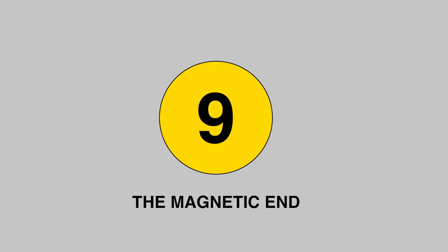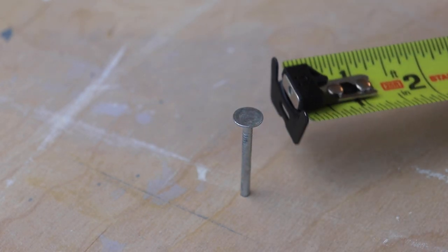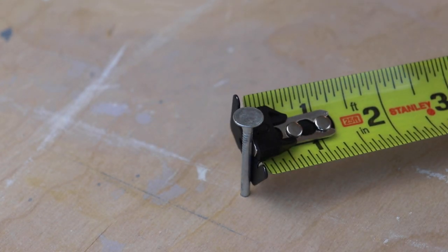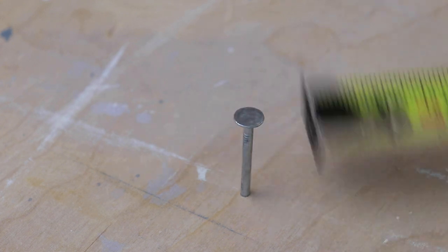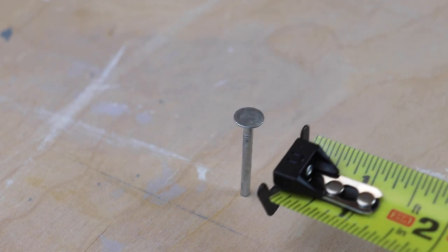Number 9: The magnetic end. Most all new tape measures have a rare earth magnet at the end of the tape measure. This is useful for many situations like picking up a screwdriver or wrench. It also helps hold the tape measure into place to provide accurate readings.